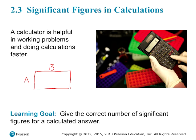Now, I'm not sure why you wouldn't just use the more accurate ruler, but let's say just for the sake of the example that we're using two different rulers. So let's say side A is measured as 1.2 inches and side B is measured as 3.124 inches. So side B is more accurate — we have a pretty good idea of the length of that side. But side A, we're not quite as accurate. We only estimated to the tenths place versus side B, where we estimated to the thousandths place.